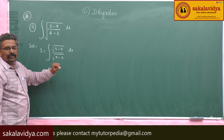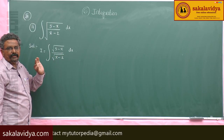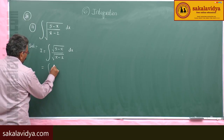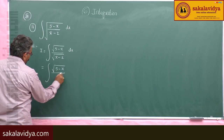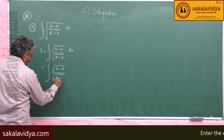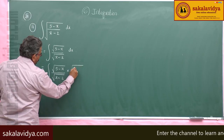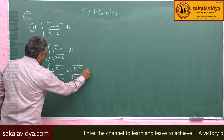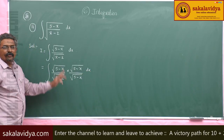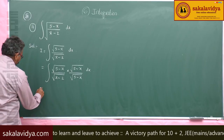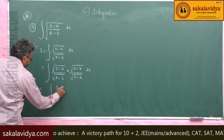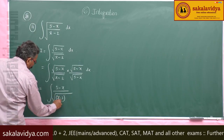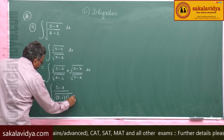Now, multiply both numerator and denominator with root of (5 minus x). This gives root (5 minus x) by root (x minus 2) into root (5 minus x) by root (5 minus x) dx. Root (5 minus x) into root (5 minus x) is (5 minus x). So we have (5 minus x) by root of (x minus 2) into (5 minus x) dx.